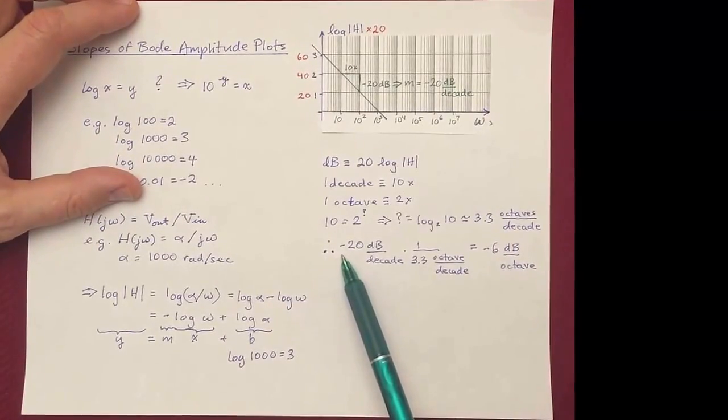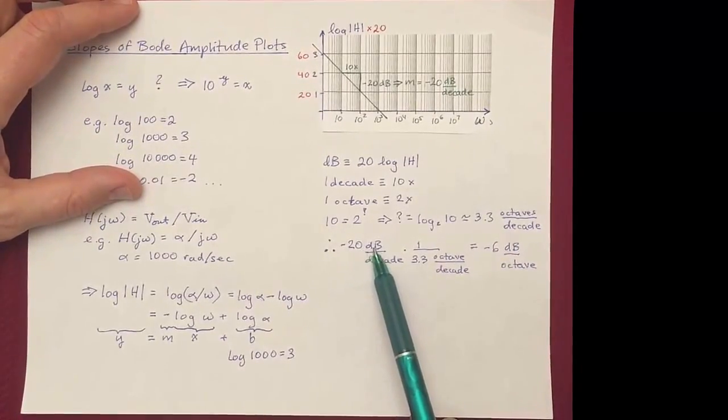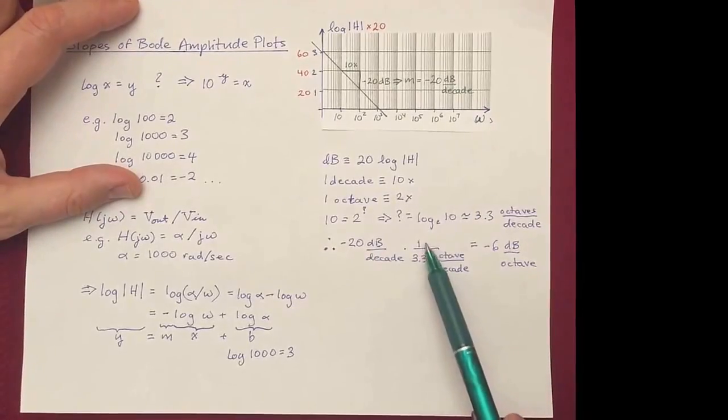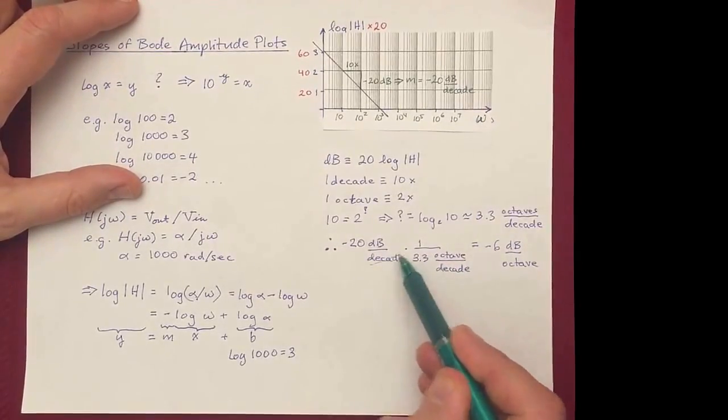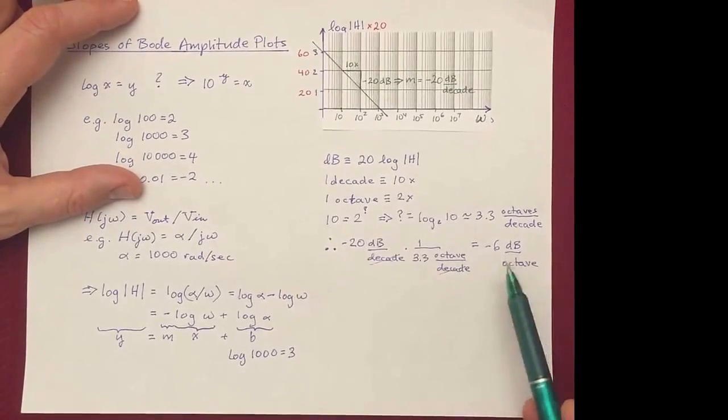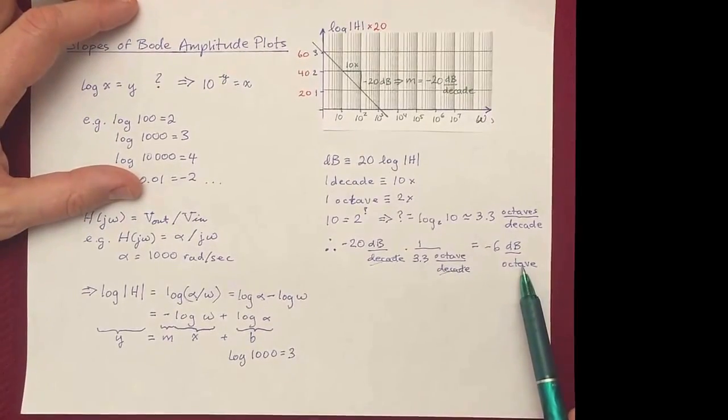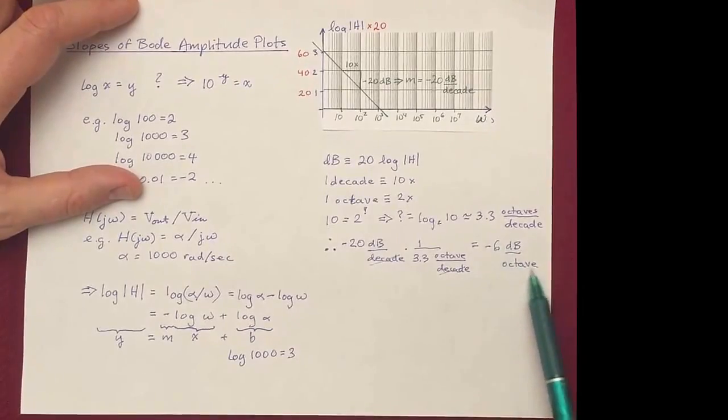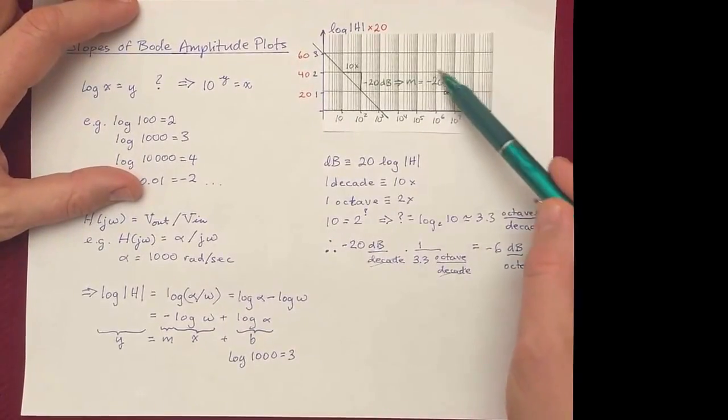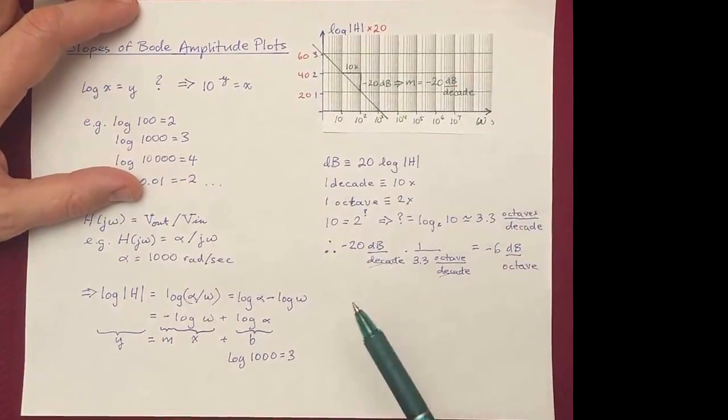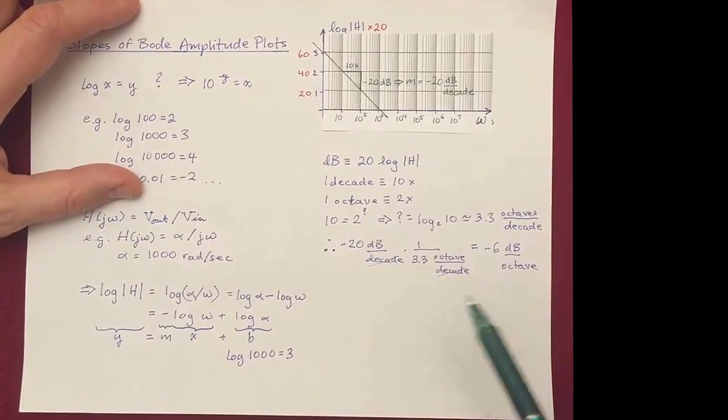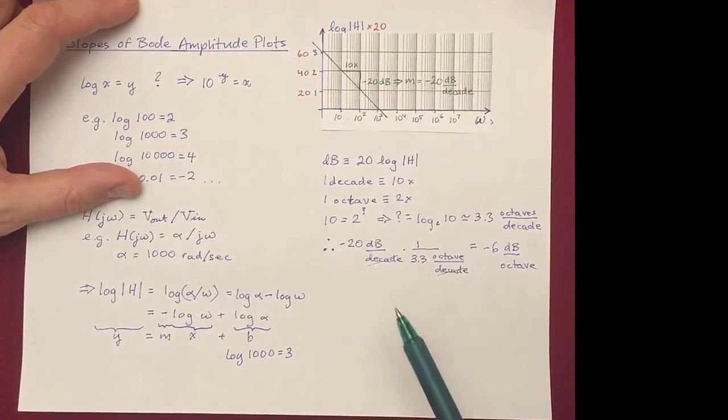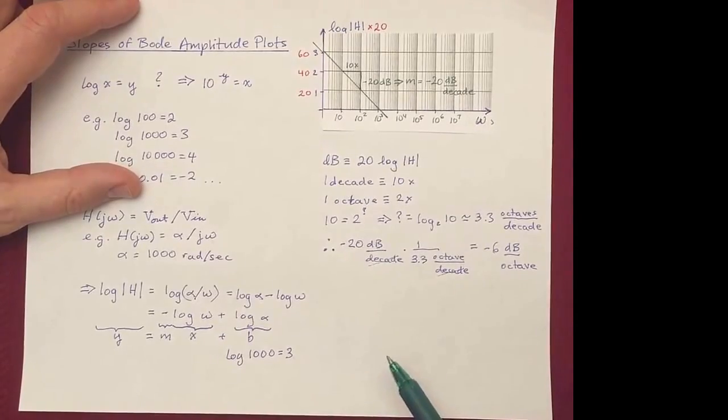So from that, you can convert between this minus 20 dB per decade that we had by just dividing by the 3.3 octaves per decade. You'll see here that the decades cancel, and you're left with minus 6 dB per octave. Now, that actually turns out to be a pretty important number, just like this minus 20 dB per decade. It shows up all the time in filter characteristics, or multiples of it, like factors of 2 and 3 of it might show up. And you'll learn more about that as you move on in circuits.